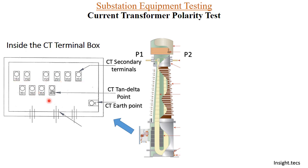The CT shown here is a dual ratio CT. It is identified because each coil has three terminals: 1S1, 1S2, and 1S3. Similarly for 2S: 2S1, 2S2, 2S3, and the same for 3S. There is also a CT tan delta point and CT earth point given here.